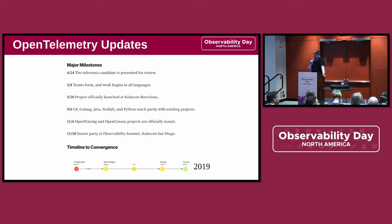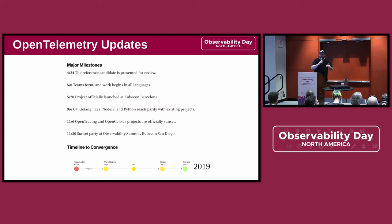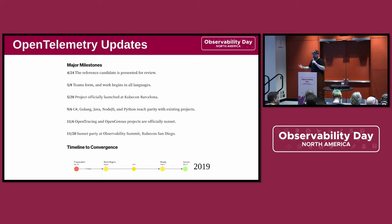I'm pretty sure it's not 2019 anymore, everyone. But if you go through this and look at what we've accomplished: we have done our reference candidates, we have formed teams — so many teams — with thousands of contributors every month from dozens of companies, both competitors in the observability space and end users at all sizes of organization. We did officially launch the project at KubeCon Barcelona. We have officially sunset OpenTracing and OpenCensus and deprecated them, which means we're a couple years late, but it's time to celebrate that we have achieved our original goals as a project — we have merged OpenTracing and OpenCensus successfully.